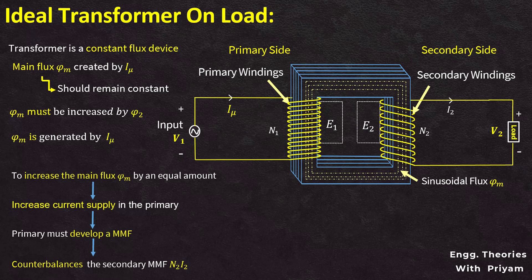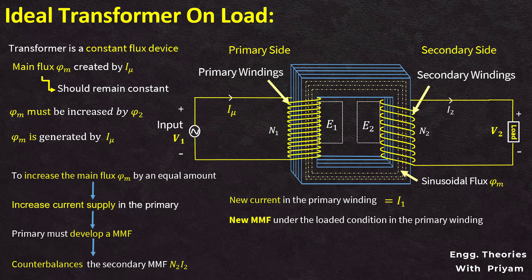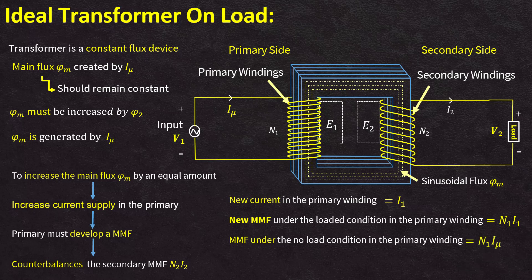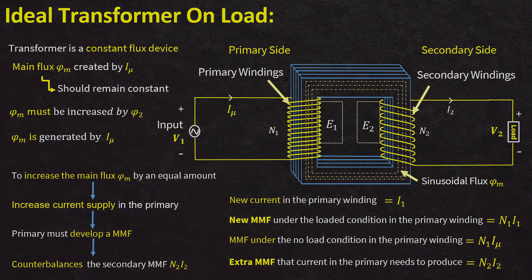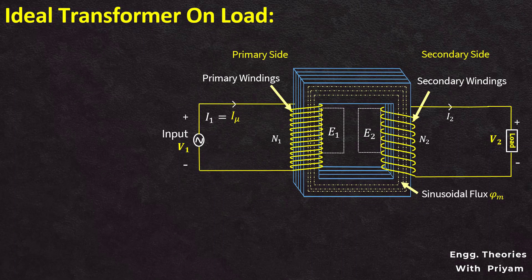So, the generated flux in the secondary winding — if we have a resistive load — then phi 2 is equal to N2I2 by R. Now, the new current in the primary winding under loaded condition is I1. So, the new magnetomotive force under the loaded condition in the primary winding is N1I1. The magnetomotive force under no load condition in the primary winding was N1I mu. So, the extra magnetomotive force that the current in the primary needs to produce is equal to the magnetomotive force due to the current flowing in the secondary winding, N2I2. For this extra magnetomotive force to be produced in the primary, an extra current I2' flows along with magnetizing current I mu.